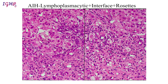For histological evidence of autoimmune hepatitis, even in the absence of serological features or serological testing, the degree of lymphoplasmacytic infiltrate and interface activity should be of at least moderate intensity in most of the portal tracts.